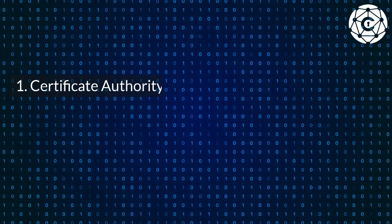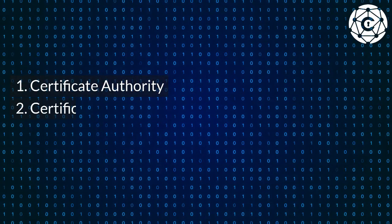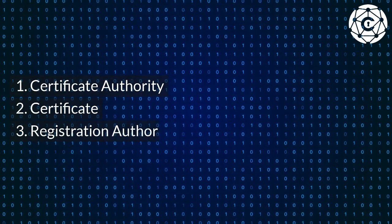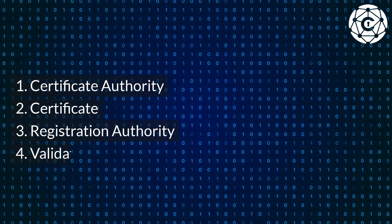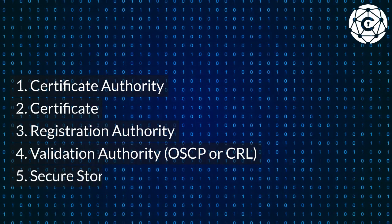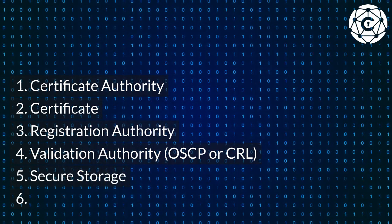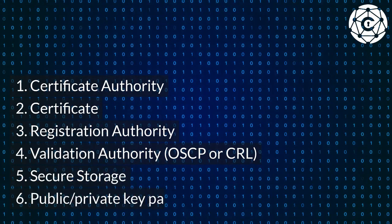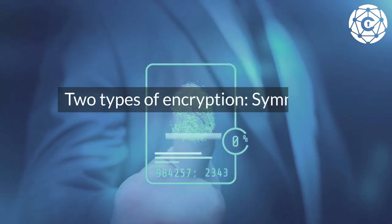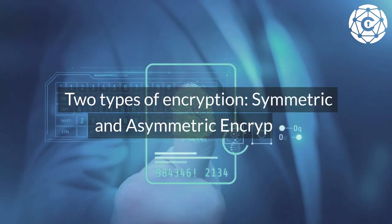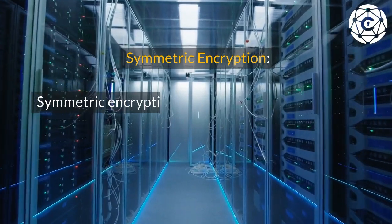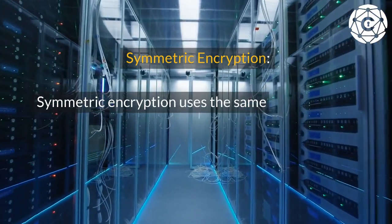Components of PKI: 1. Certificate Authority. 2. Certificate. 3. Registration Authority. 4. Validation Authority — OCSP or CRL. 5. Secure Storage. 6. Public-private key pair.